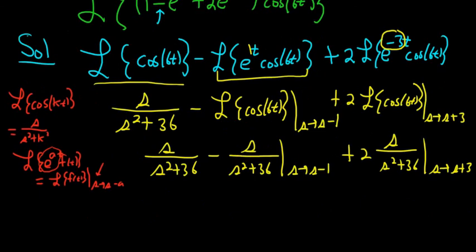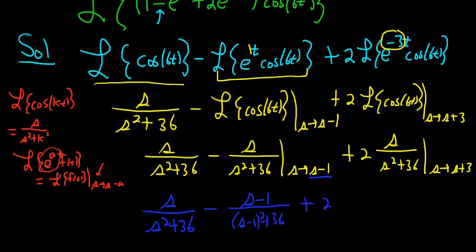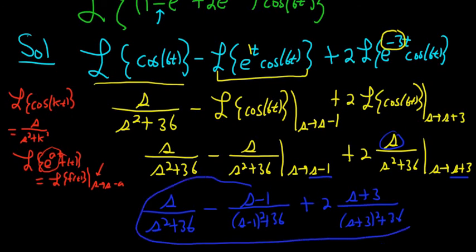So this is simply s over s squared plus 36. Here we have to replace all of the s's with s minus 1's. So it's minus s minus 1 over s minus 1 squared plus 36, and then plus 2. And then here we replace all of the s's with s plus 3's, so it's s plus 3 over s plus 3 squared plus 36. And that is the final answer.